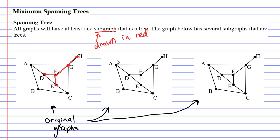Now this particular subgraph is a tree because it has no loops, no multiple edges and no cycles.